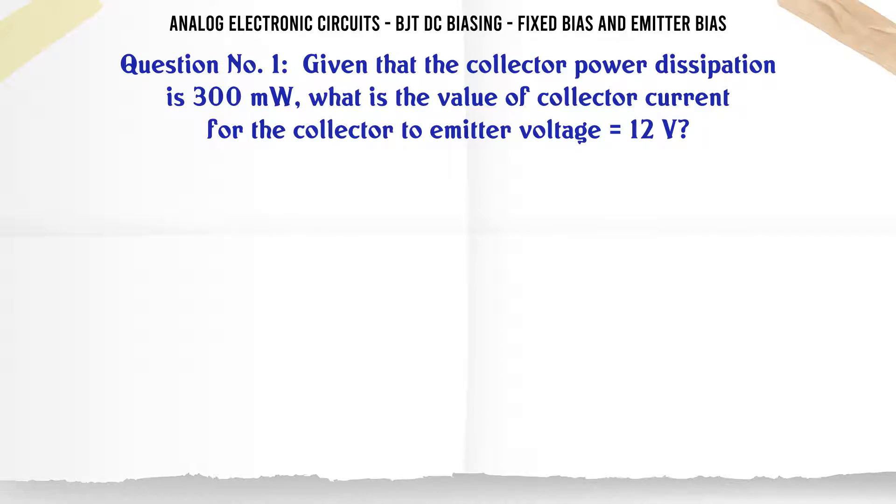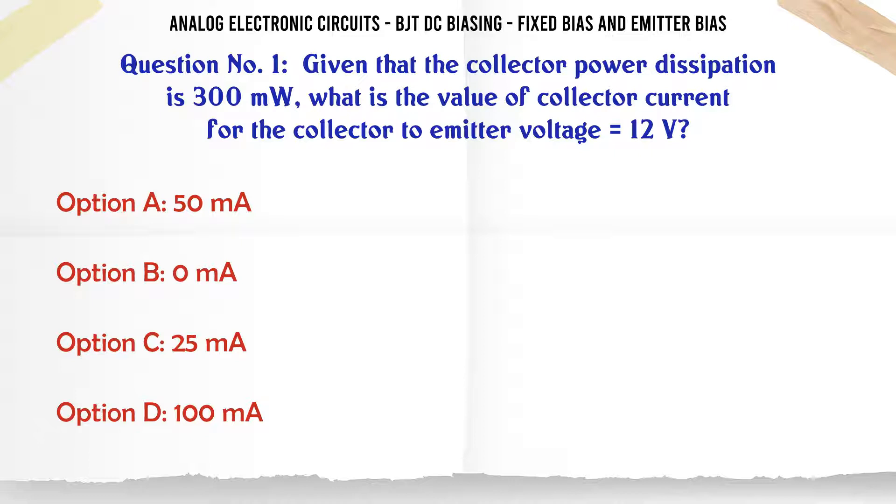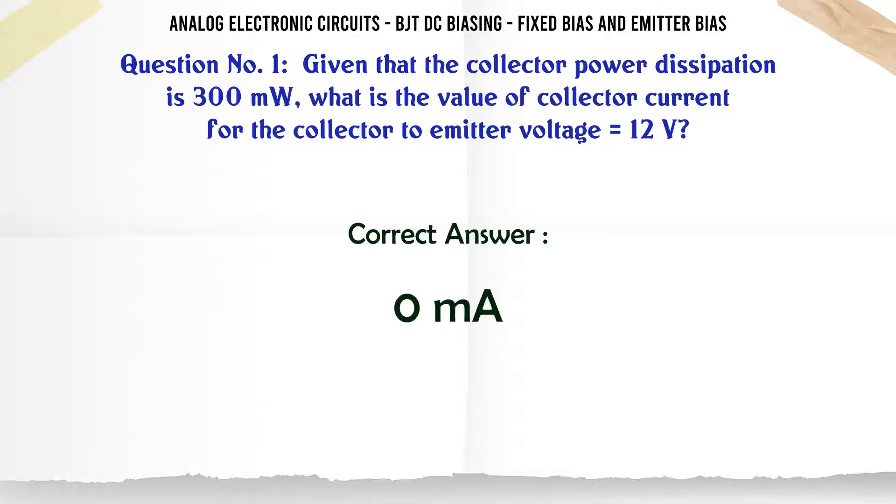Given that the collector power dissipation is 300 mW, what is the value of collector current for the collector to emitter voltage 12V? A: 50 mA. B: 0 mA. C: 25 mA. D: 100 mA. The correct answer is 0 mA.